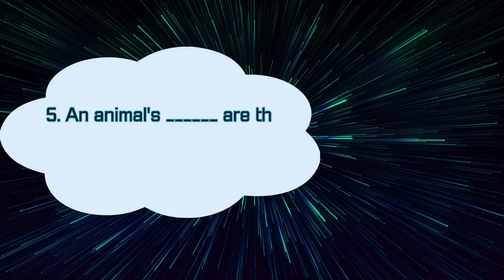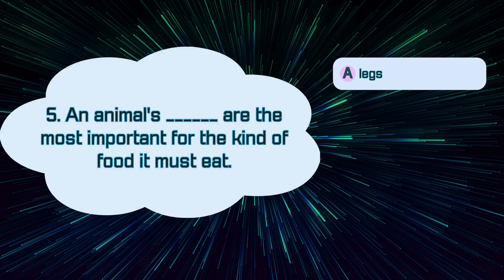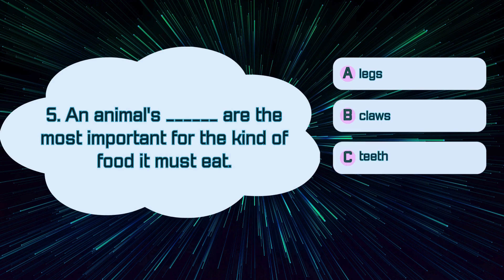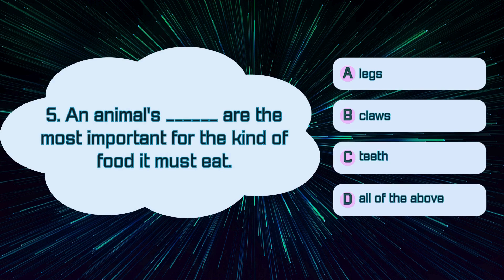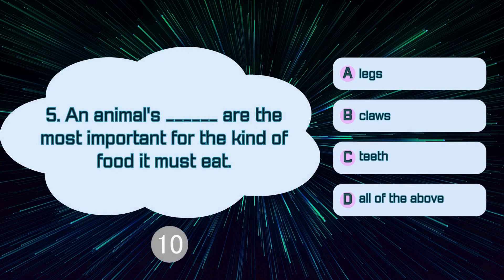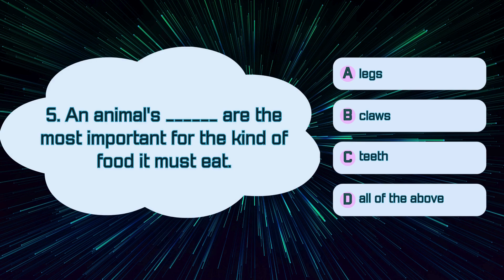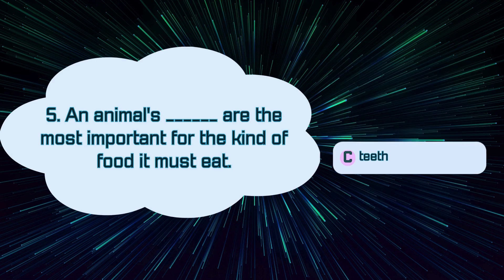Number 5. An animal's blank are the most important for the kind of food it must eat. A. Legs, B. Claws, C. Teeth, D. All of the above. The correct answer is C. Teeth.